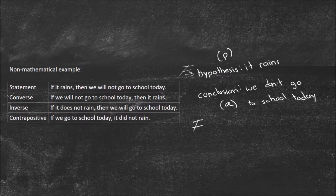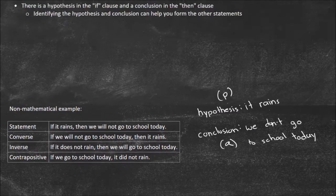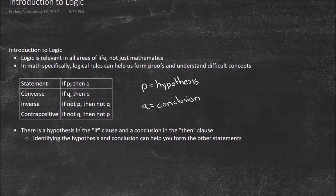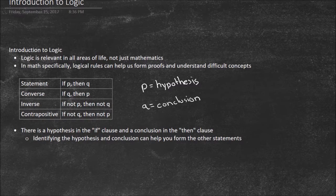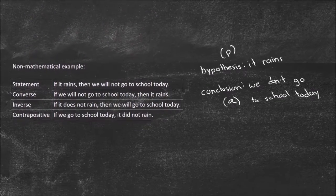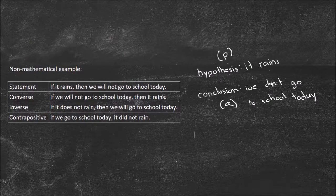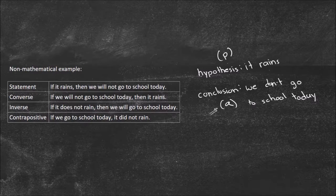Lastly is a word you may have never heard before: the contrapositive. This one is: if not Q, then not P. One way to think about it is to look at the converse and then make both parts negative, or look at the inverse and switch the sides. In our case: 'if we go to school today' — that is not Q — 'then it did not rain' — because that is not P.